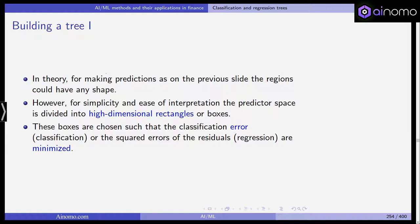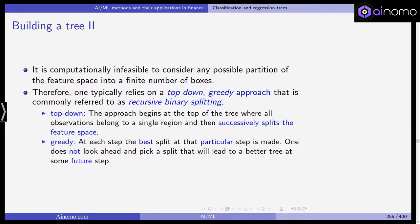So for simplicity and ease of interpretation, the predictor space is often divided into high dimensional rectangles or boxes and these boxes are chosen such that the classification error or the squared error of the residuals in regression analysis are minimized. So we have an optimization problem again. Now if you think about what is possible, then of course think about this predictor space as maybe an image and the boxes as pixels. Well obviously with a higher definition resolution, obviously you get more pixels, you get more boxes. So it's theoretically at least possible to partition the predictor space into an infinite number of boxes.